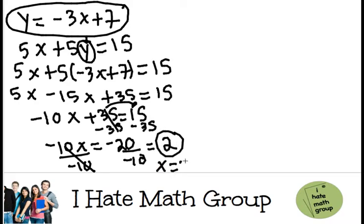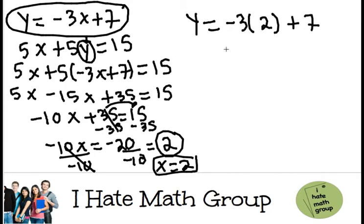Awesome. x equals 2. Now I can find my y by doing y equals negative 3 times 2, because look, I have an x, plus 7. y equals negative 3 times 2 is negative 6 plus 7. y equals 1.